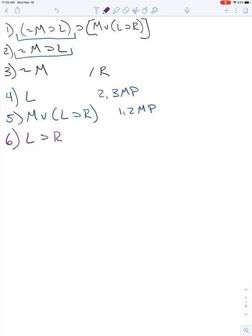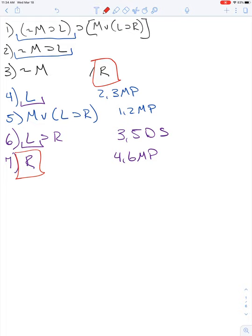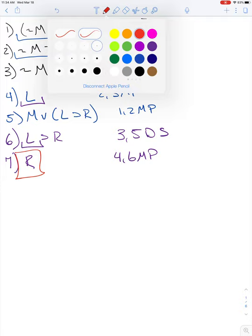Now we have L to R, so we're really close. If you notice, we have an L here, we have an L here. So now we get our R by four and six, modus ponens. And then we got this one right here from three and five DS. And we know we're done because these line up perfect. So for this one, it was just a lot of modus ponens and DS.